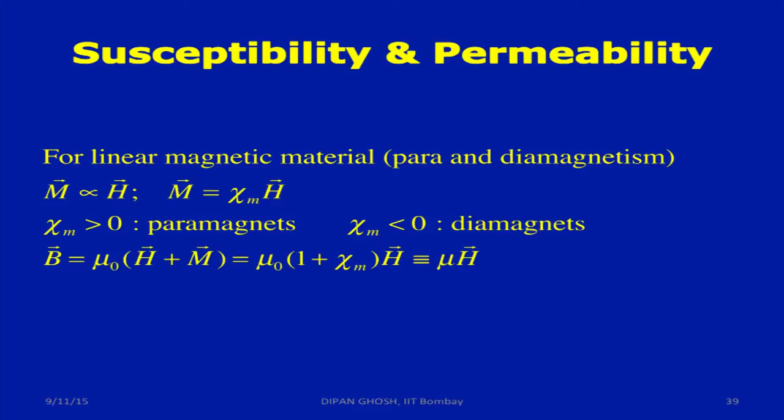If you have linear magnetic material, where the magnetization is proportional to this H, and you have this expression, paramagnets are characterized by susceptibility becoming greater than zero. And diamagnets of course have susceptibility less than zero, etc.